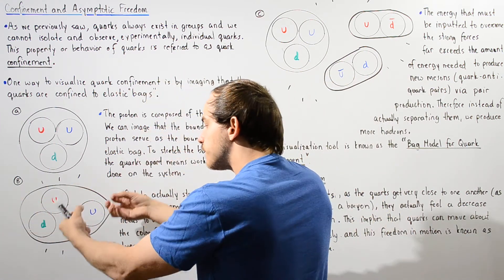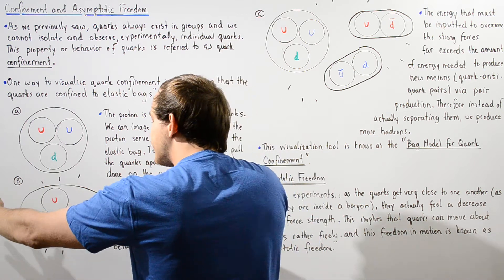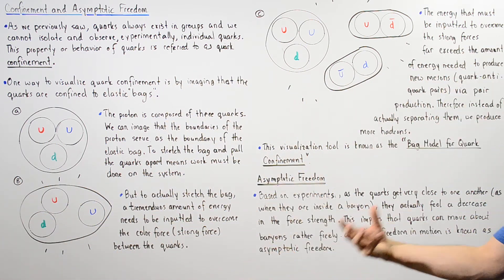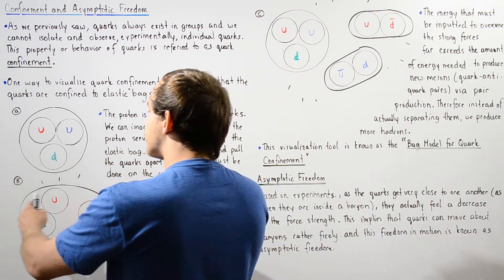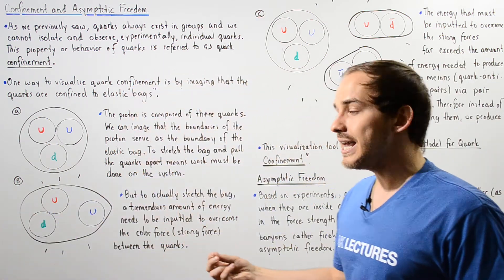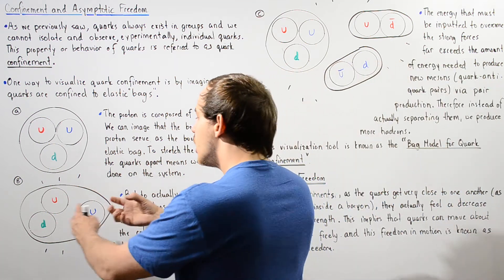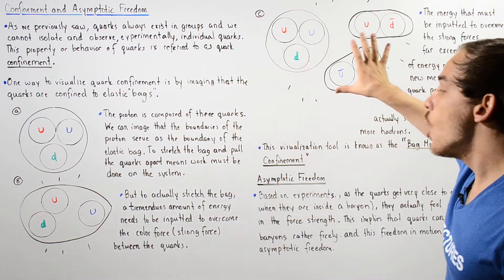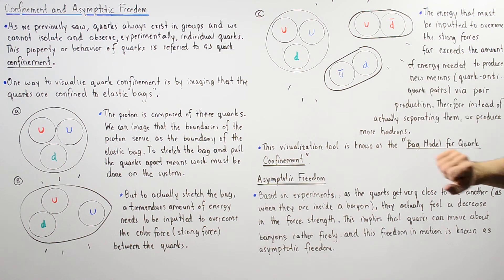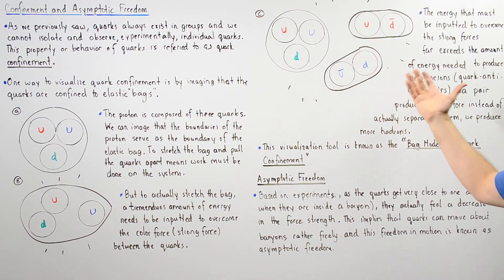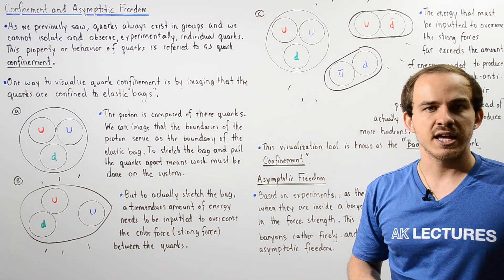When we try to stretch the bag, the color force, the strong force begins to increase. A great amount of energy must be inputted to actually separate the quarks. And because the energy is so high, when we try to input that energy, we simply end up creating more mesons and more baryons as shown in this diagram.